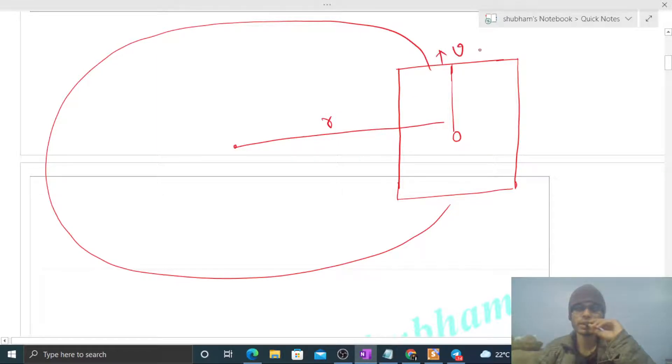We have to find out the time period of this pendulum in this rotating frame. So in this rotating frame, it is a non-inertial frame. In a non-inertial frame, the time period of a simple pendulum is 2π√(L/g_effective).